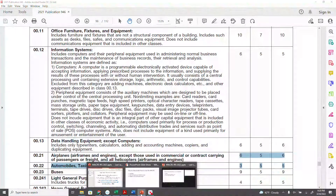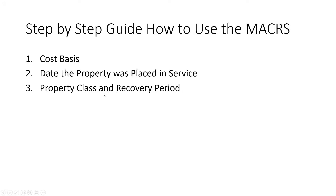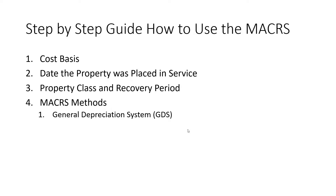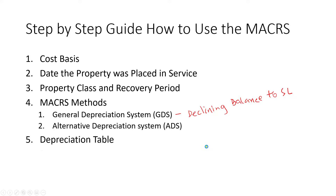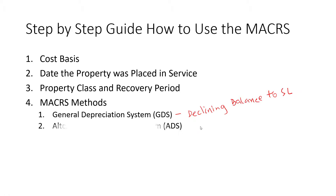Once you know the property class — say a five-year life property class automobile with a recovery period of five years — then you need to decide what type of depreciation system to use. There are two different kinds: one is the General Depreciation System, which is the declining balance switchover to the straight-line system, and the other is the Alternative Depreciation Method, which is simply the straight-line method.